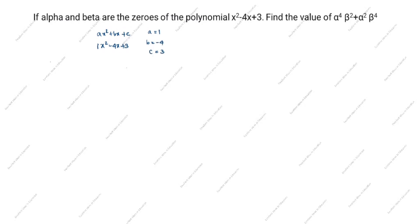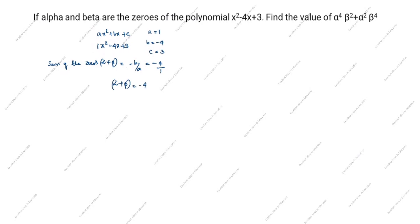What is the sum of the zeros formula? Sum of the zeros equals alpha plus beta equals minus b by a. Here b is minus 4 and a is 1, so minus 4 divided by 1. Alpha plus beta is equal to minus 4.